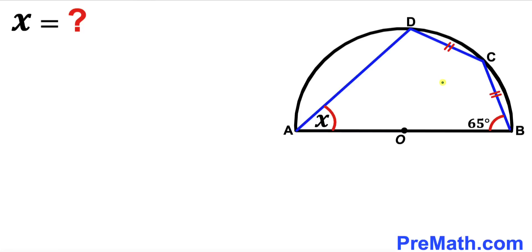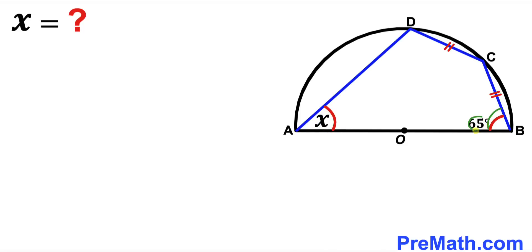Welcome to pre-math. In this video we have a semicircle with center O and a quadrilateral ABCD fully inscribed inside this semicircle, such that chord CD equals chord BC. Moreover, angle DAB is represented by x degrees and angle ABC is 65 degrees. Our task is to calculate angle x.